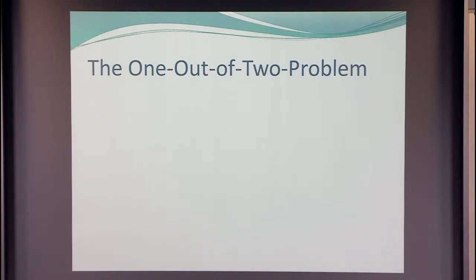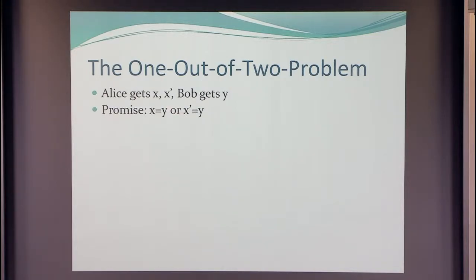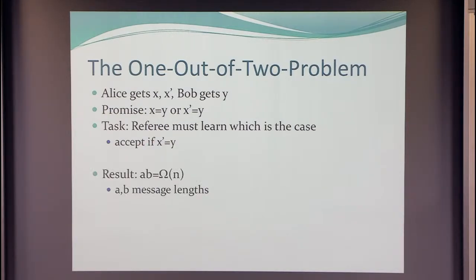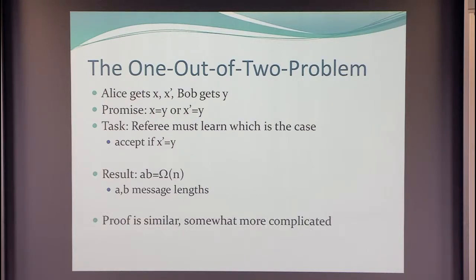How do we get to the non-deterministic case? There's the one-out-of-two problem, which is a variation of equality. Alice gets two strings x and x prime, Bob gets y, with the promise that x = y or x prime = y, and the referee has to decide which. In particular, let's say he has to accept if x prime equals y. Using a slightly more involved version of this argument, we were able to show that even for this problem, the product of the message lengths has to be Omega(N). The previous proofs don't work for this problem, but ours generalizes very easily.